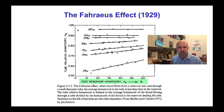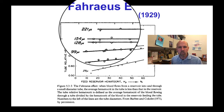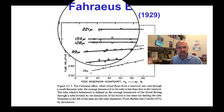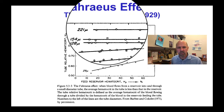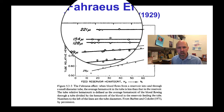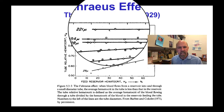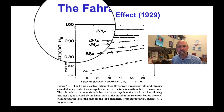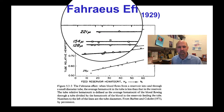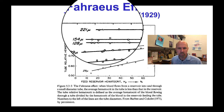For a 221-micron tube, the hematocrit — the red blood cell fraction — is actually slightly lower than the hematocrit in the reservoir of blood that was supplying the tube, and that ratio wasn't really dependent on the hematocrit in the reservoir, varying here between 15 and 60.